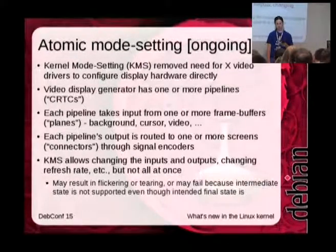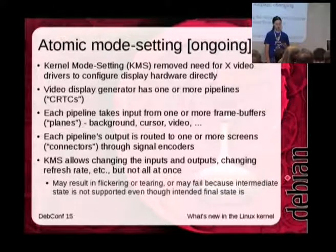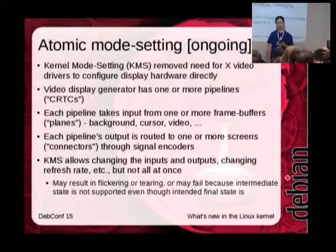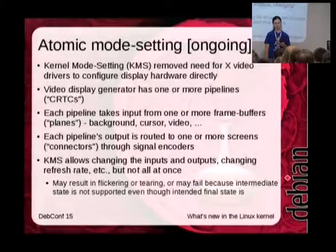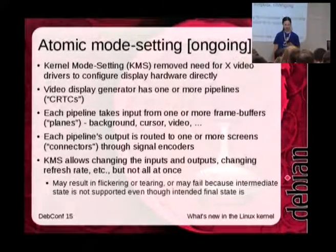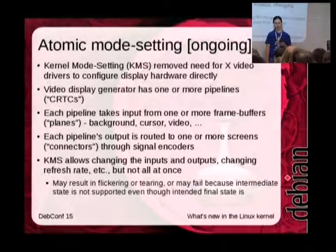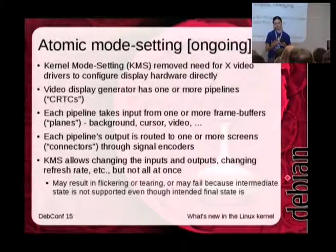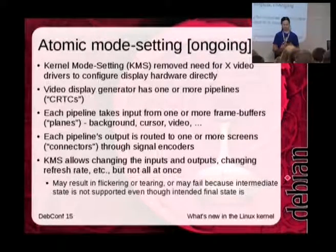Something that's ongoing in graphics — not completed yet — is atomic mode setting. You probably know about kernel mode setting, which makes the kernel responsible for managing video display generators and memory for the graphics hardware. That removed the need for the X server to manage all of this from user land. There's a kernel subsystem called DRM — Direct Rendering Manager — which originally was all about 3D GPUs but now takes care of mode setting and memory management as well.